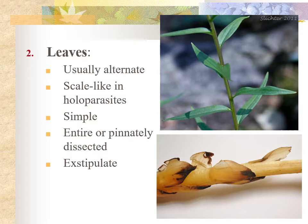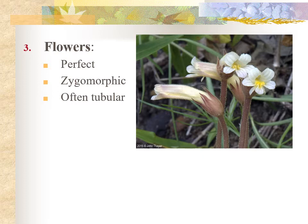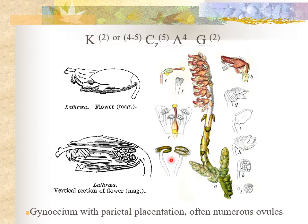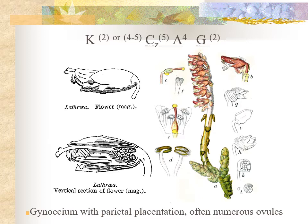Flowers in the Orobankaceae are perfect, zygomorphic, and often have a tubular shape. The floral formula shows the calyx is composed of two or four to five sepals with a synsepalous calyx. The corolla is zygomorphic and sympetalous, composed of five petals. There are four stamens in the androecium, which are epipetalous. The gynoecium is syncarpous with two carpels, a superior ovary, parietal placentation, and often numerous ovules.